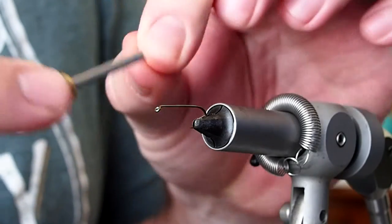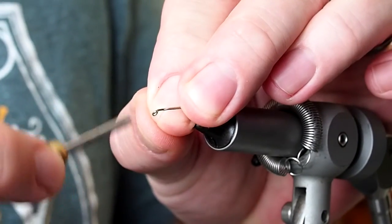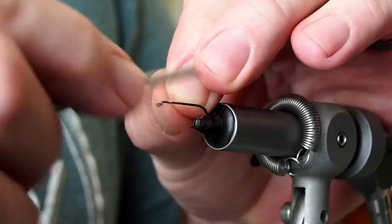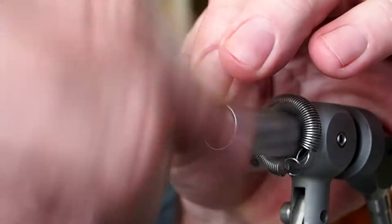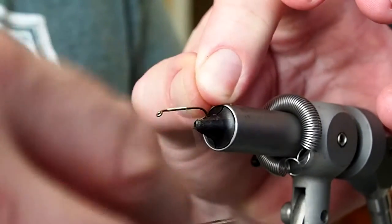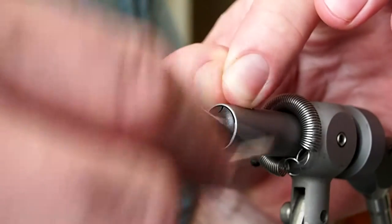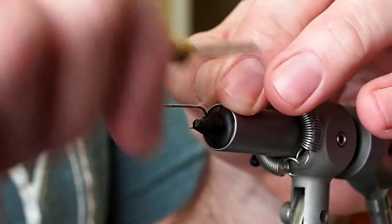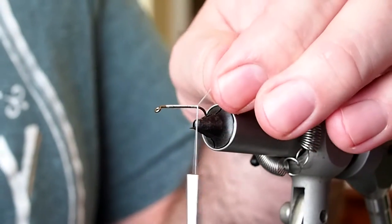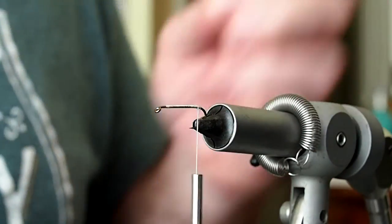I'm going to start about one and a half eye lengths behind the eye and take my thread down to the barb, and trim away our excess thread.